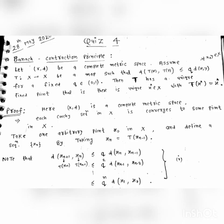Proof of our theorem: given that (X, d) is a complete metric space, meaning any Cauchy sequence in X converges to some point in X. Now take an arbitrary point x₀ in X and define a sequence xₙ as follows: xₙ equals T(xₙ₋₁). So x₀ is mapped to x₁, x₁ is mapped to x₂, x₂ is mapped to x₃, and so on. Note that T(xₙ) equals xₙ₊₁ and T(xₙ₋₁) equals xₙ.